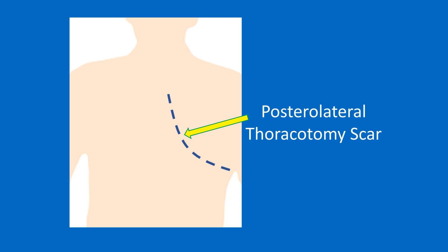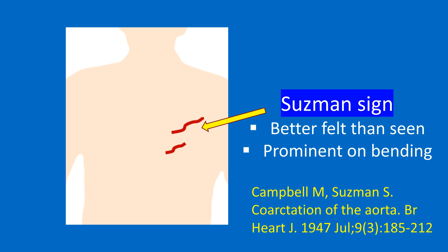The fourth category is dilated veins. Dilated veins can occur with obstruction of the superior or inferior vena cava. Direction of blood flow in the dilated veins will be downwards in superior vena cava obstruction and upwards in inferior vena cava obstruction. The fifth category is dilated arteries. Dilated intercostal arteries and anastomoses around the scapula may be visible in coarctation of the aorta, but they are often better felt than seen. The apex beat is better characterized by palpation though it is often visible.